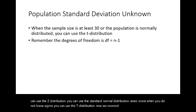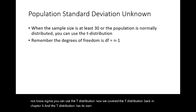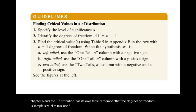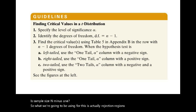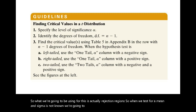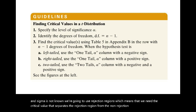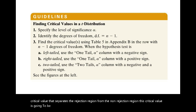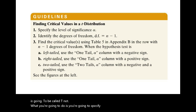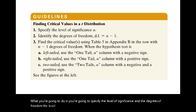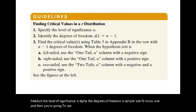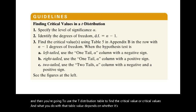We covered the t distribution back in chapter 6, and the t distribution has its own table. Remember that the degrees of freedom is sample size n minus 1. We're going to be using rejection regions. When we test for a mean and sigma is not known, we need the critical value that separates the rejection region from the non-rejection region. This critical value is called t-naught. You specify the level of significance alpha and the degrees of freedom n minus 1, then use the t distribution table to find the critical value or critical values. What you do with that table value depends on whether it's a left tail test, a right tail test, or a two tail test.